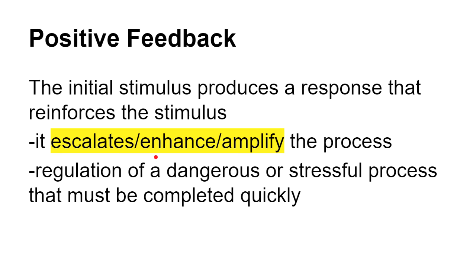In addition to negative feedback — where you're thinking about maintaining the range — there is also positive feedback. When you hear positive feedback, it's not just about bumping things up. Negative feedback means maintain the range; positive feedback is to escalate, enhance, or amplify a process. We look at loops with this because it's going to continue to accelerate a process until it can be completed quickly.